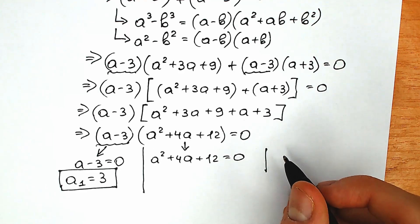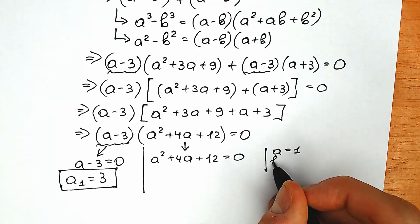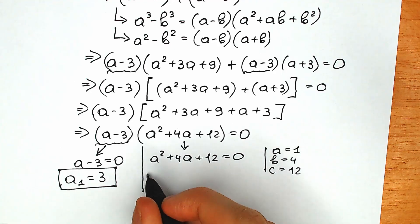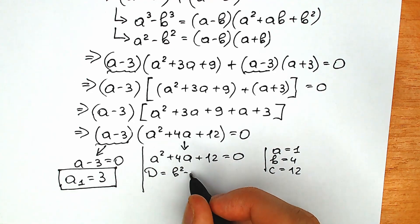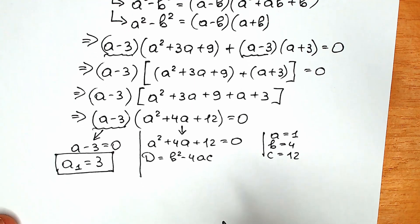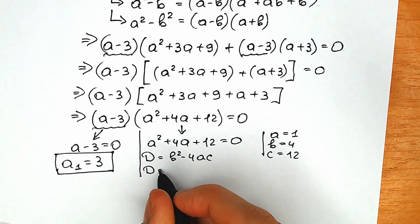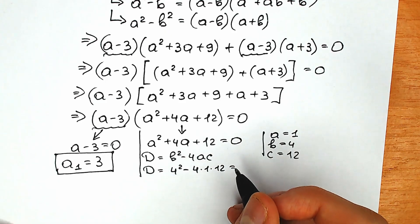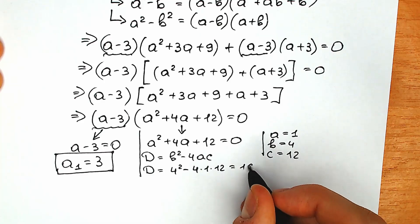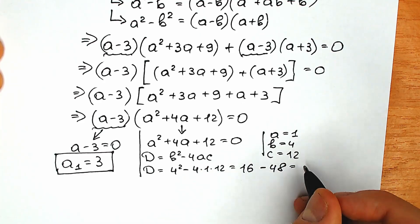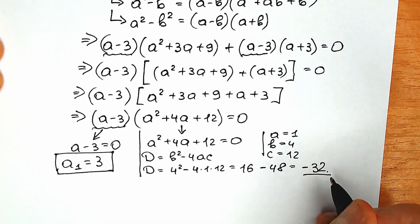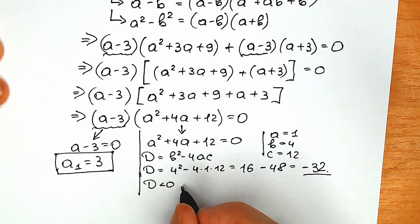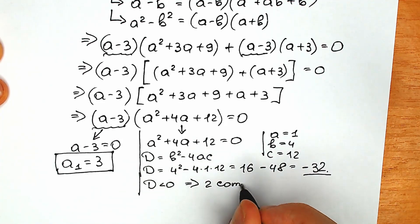We have a = 1, b = 4, and c = 12. Let's plug each coefficient into the discriminant formula: D = b squared minus 4ac. So D = 4 squared minus 4 times 1 times 12. As a result, our discriminant equals 16 minus 48, which equals minus 32. This discriminant is negative, which means D is less than zero, so we will have two complex roots.